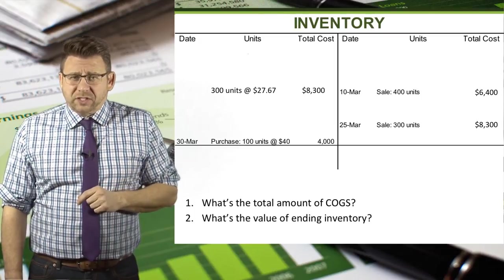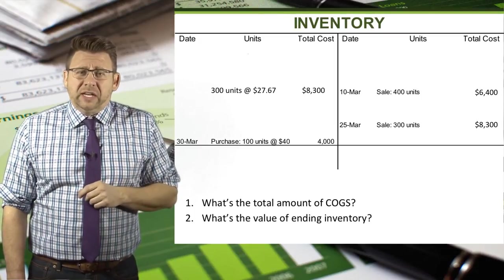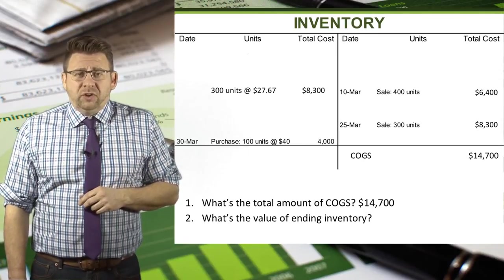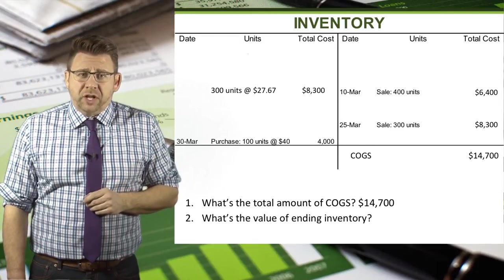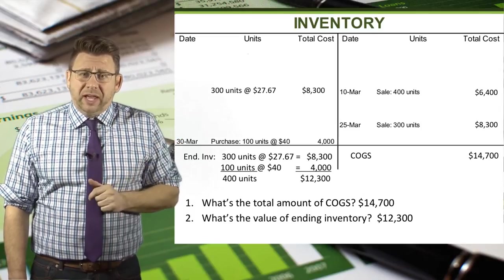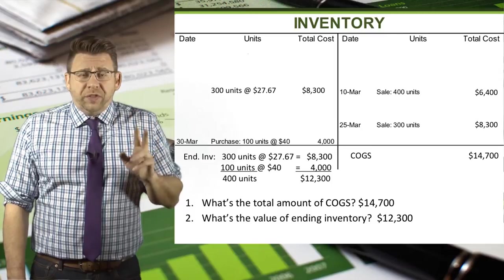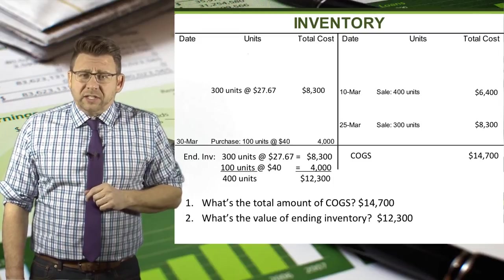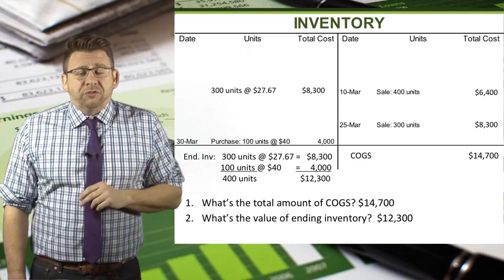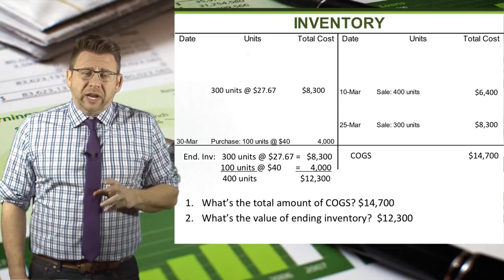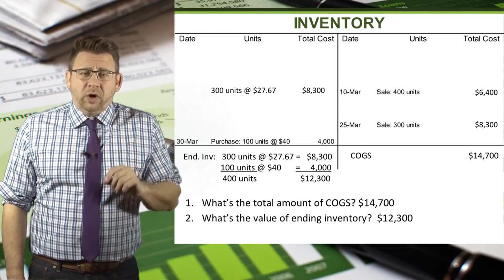So what's the total amount of cost of goods sold and what's the value of the ending inventory? Cost of goods sold is the credit side of the inventory account, which in this case totals $14,700. Ending inventory is the remaining amount on the debit side — 300 units with an average cost of $8,300. We add to that the 100 units from the March 30th purchase with a total cost of $4,000, totaling 400 units of inventory with a value of $12,300.